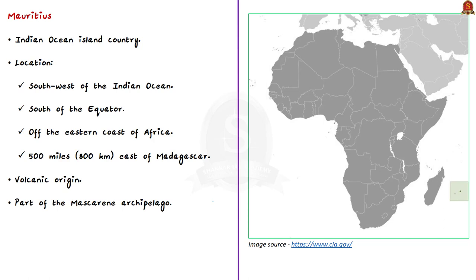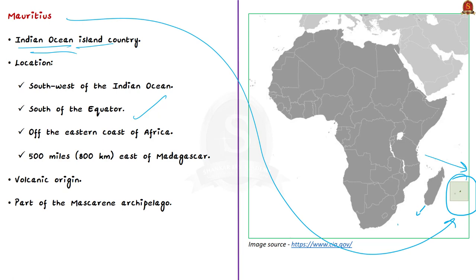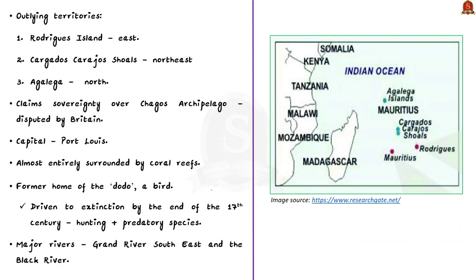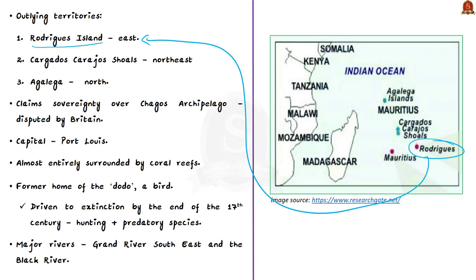Mauritius is an island country in the Indian Ocean, situated in the southwest of the Indian Ocean, south of the equator, and about 800 kilometers east of Madagascar off the eastern coast of Africa. The island is of volcanic origin and forms part of the group of islands commonly known as the Mascarenes. Mauritius also has certain outlying territories, including Rodrigues Island, situated to the east of the main island and the smallest of the Mascarene archipelago.